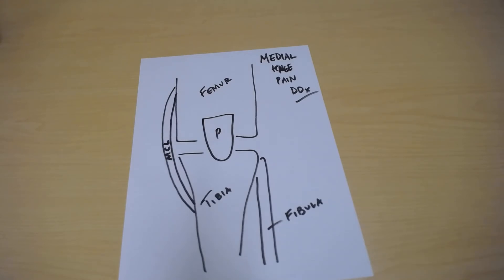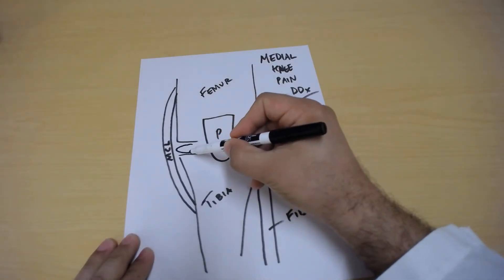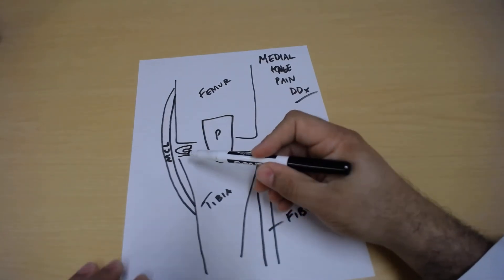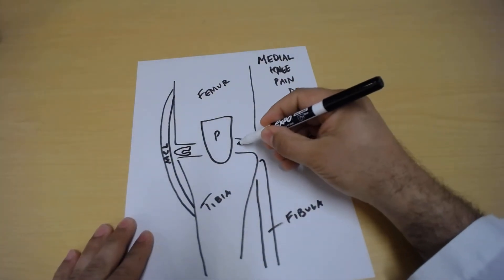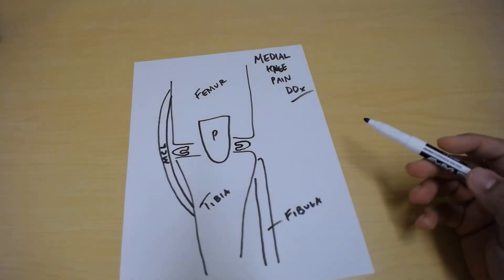Just to the inside of that MCL there's a structure called the meniscus and it's kind of almost like a kidney bean shaped structure and that's a pad. It's a pad that sits between the femur and the tibia. You have one both on the medial side of the knee and you also have one on the lateral side of the knee. And those are bumpers.